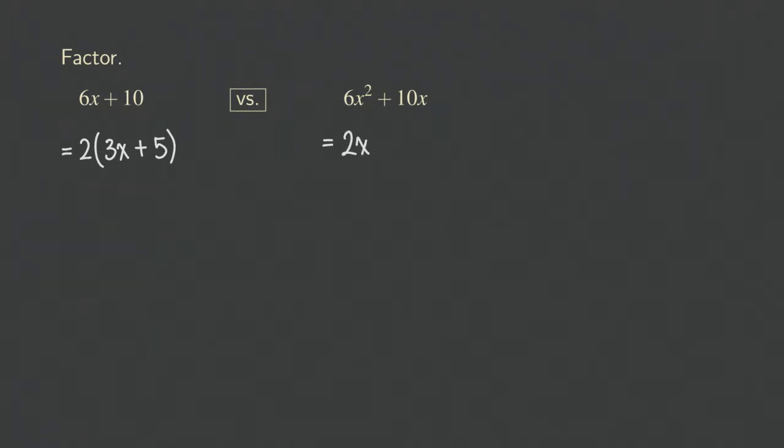Now we open parentheses and figure out what's in here. Something times 2 gives us the 6. As you can see from the previous problem, we get the 3, so we can just put down 3. Now something times x will give us the x squared. That should be simple. We just need another copy of the x to get x squared, so we get 3x.